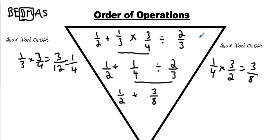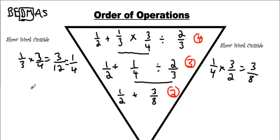So what I have essentially here is 1, 2, 3, 4 terms. I've got 3 in the next row. I've got 2 in the next row, and it always should decrease like that, one term at a time. We have one more step to go. We have to do 1 half plus 3 over 8.